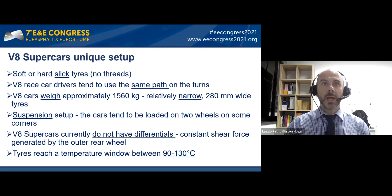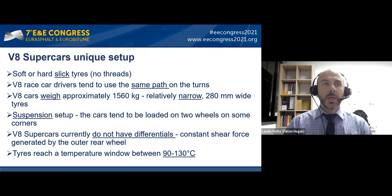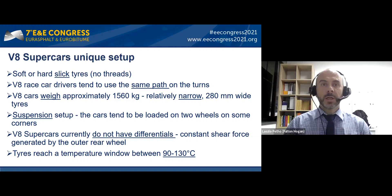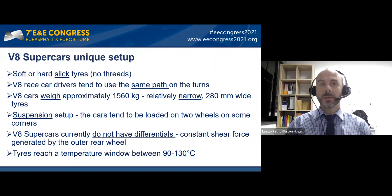V8 Supercars are very unique race cars — they use soft or hard slick tires and the drivers tend to drive on the same path without deviating a millimeter. These cars are relatively heavy, sitting on a narrow set of tires. Their suspensions are set up so that on chicanes the cars tend to be on two wheels and, because they have no differentials, they provide a lot of shear forces on turns. Tire temperatures can reach up to 130 degrees.